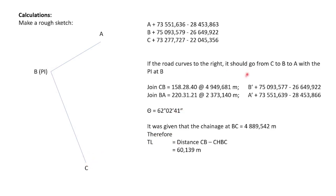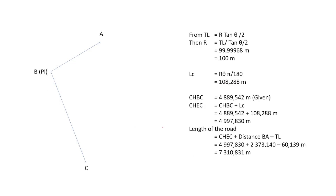We know C to B is 4949 meters, but our chainage was given as 4889. If we mark out the beginning of curve and end of curve, the tangent length TL from the beginning of curve to B is the calculated distance minus the chainage, which gives us 60 meters. So TL equals 60 meters.